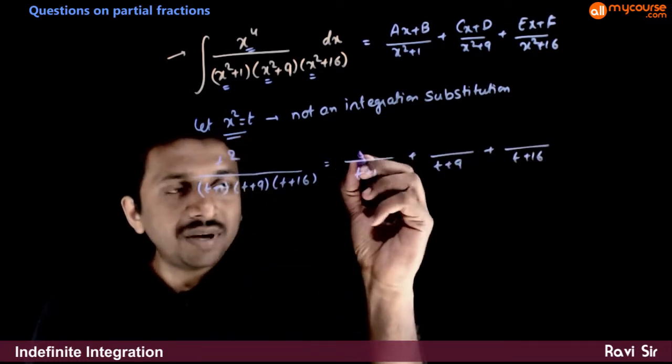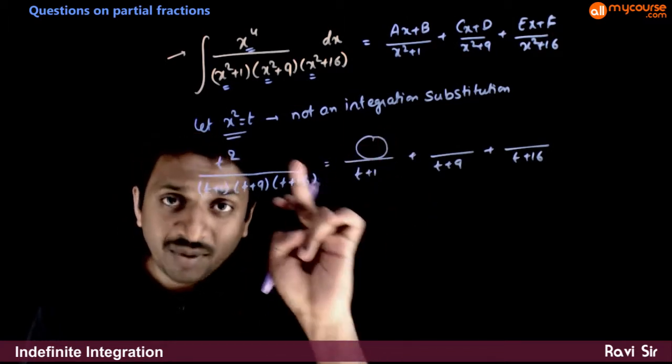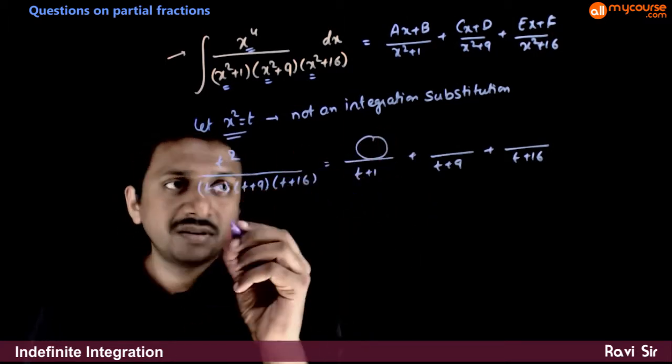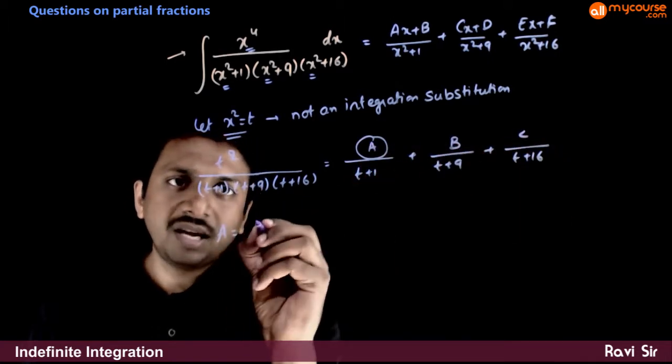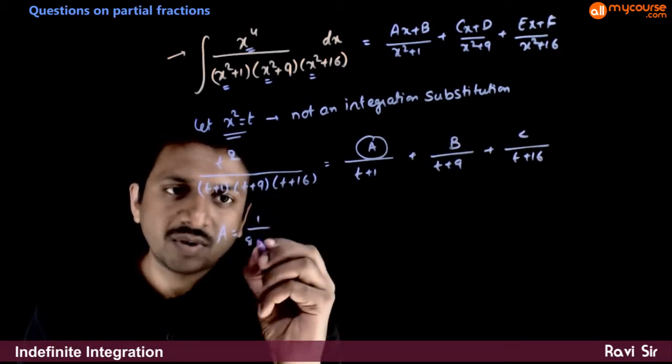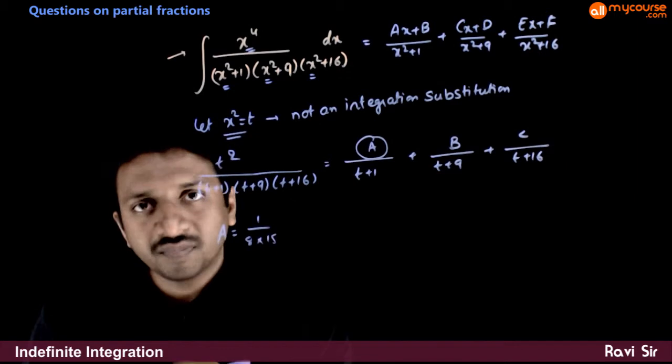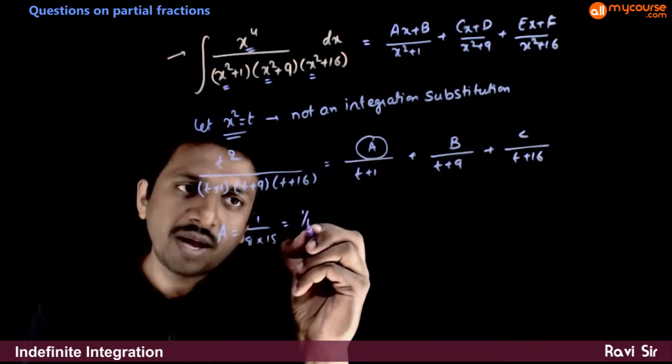What is the number that I have here? The number can be obtained by putting t equal to minus 1. So a is equal to 1 by minus 1 plus 9 is 8 times minus 1 plus 16 is 15. So a is 1 by 8 into 15, 1 by 120.